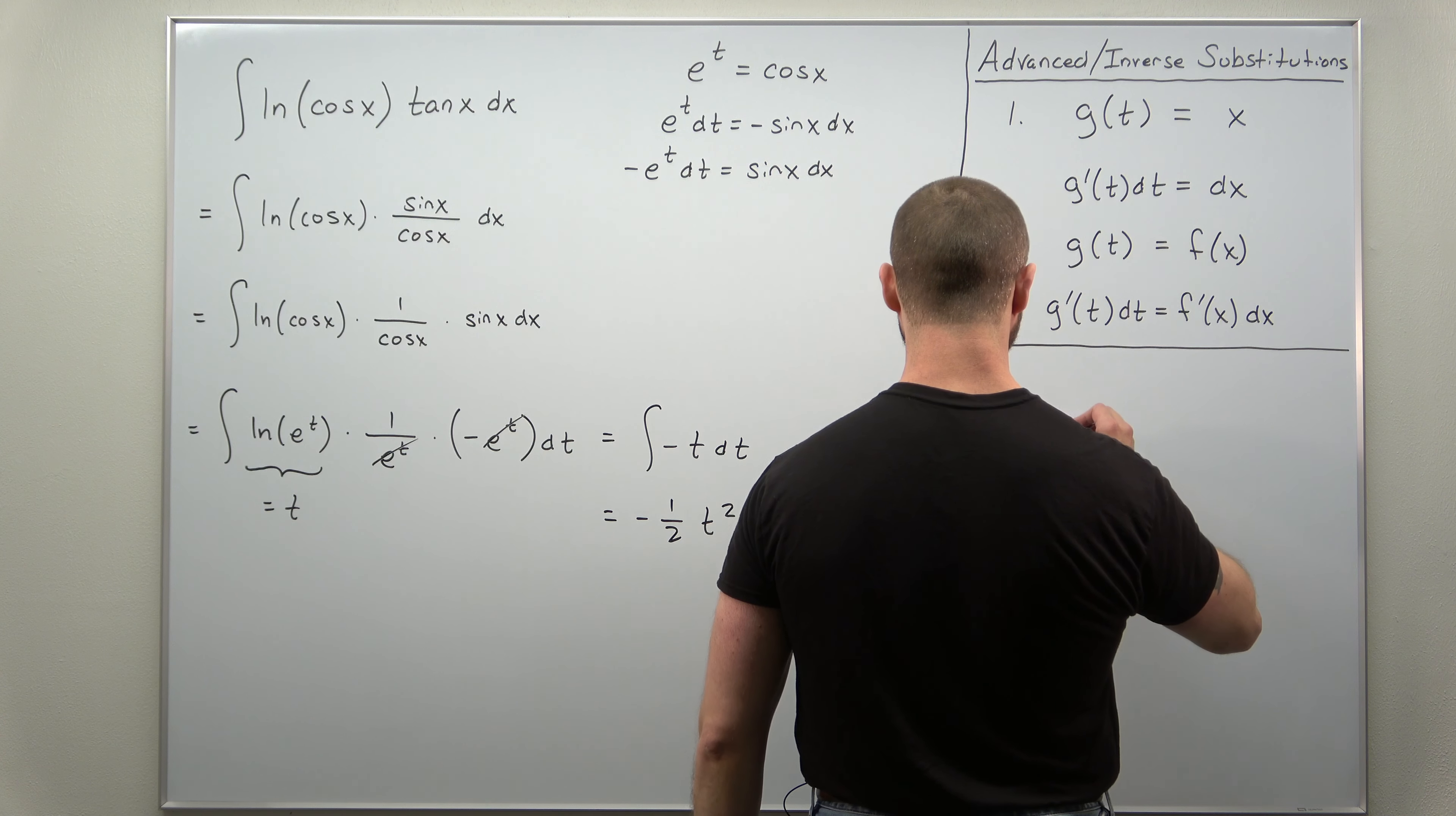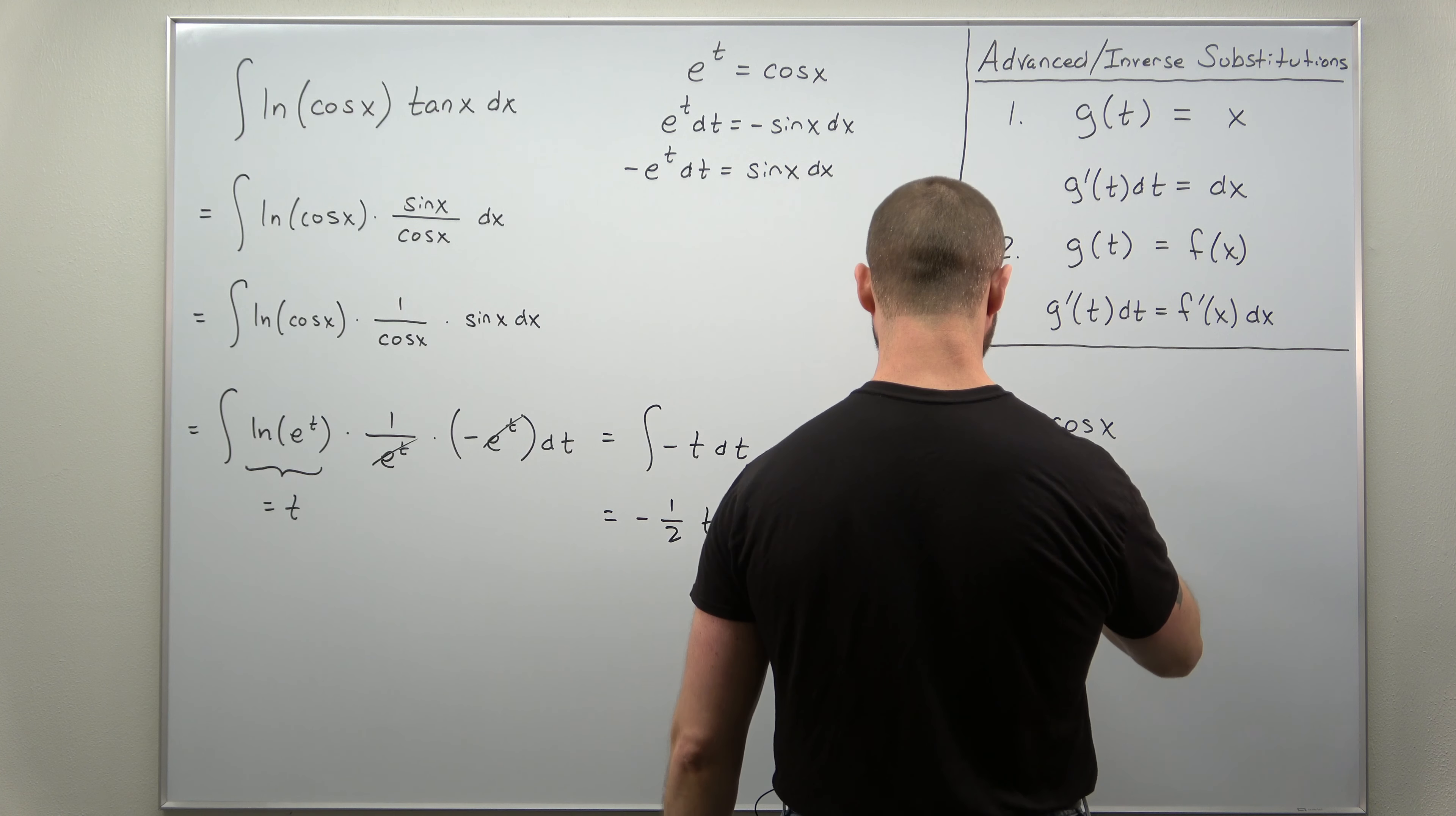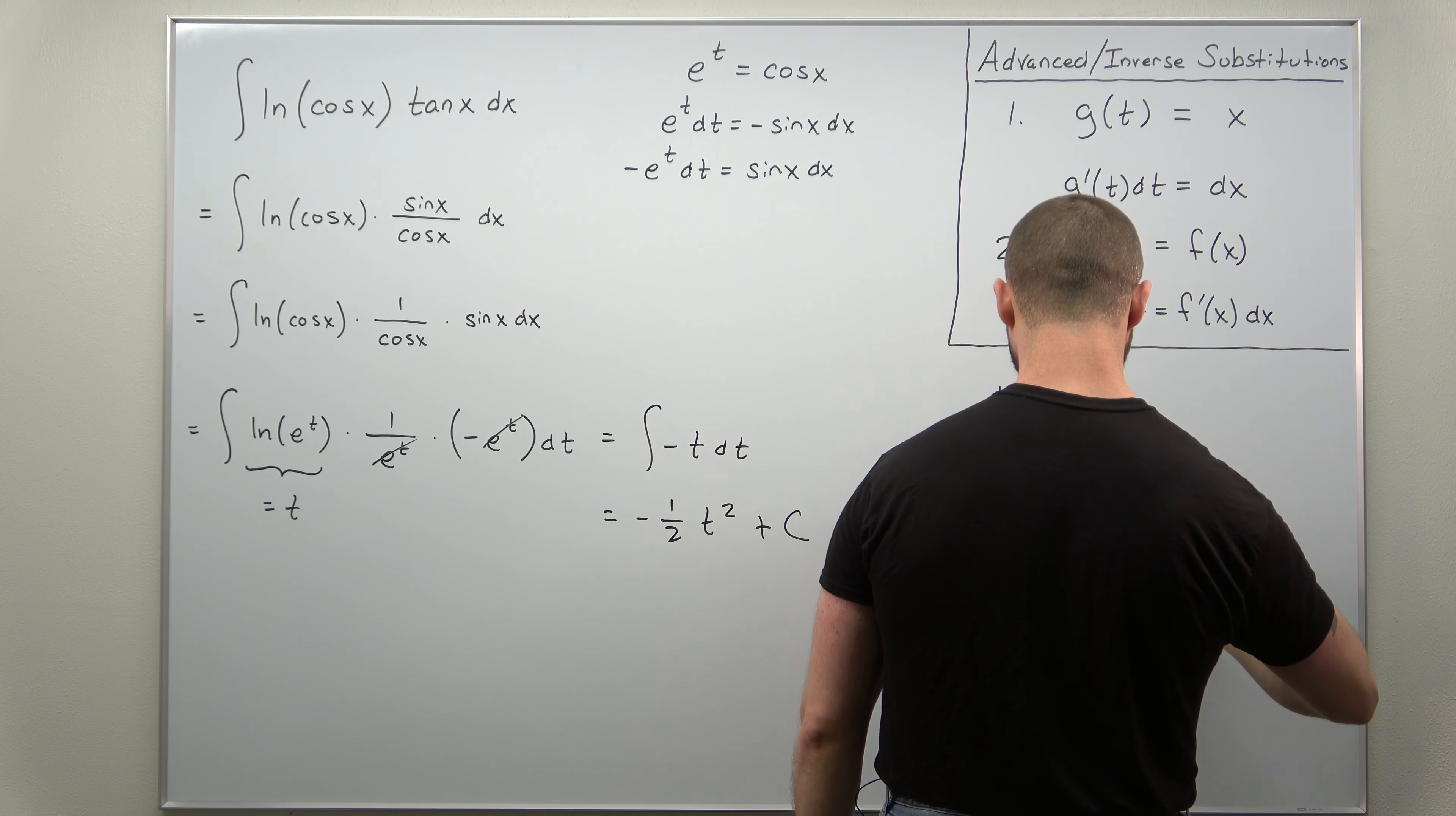e to the t equals cosine of x, and we need to basically solve that for t, which is very common in using advanced and inverse substitutions. So we can just take the natural log of each side. Natural log of e to the t that will cancel. And it looks like you should get here t equals natural log of cosine of x.